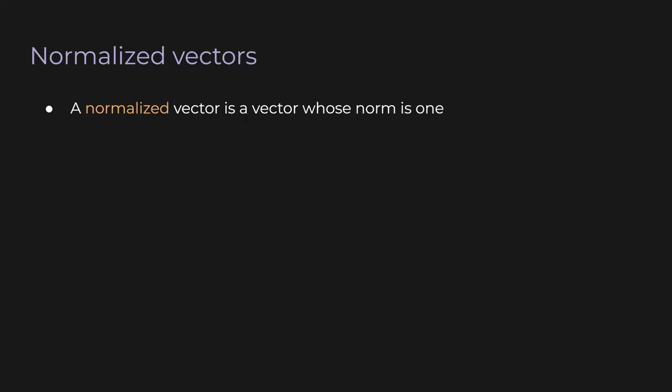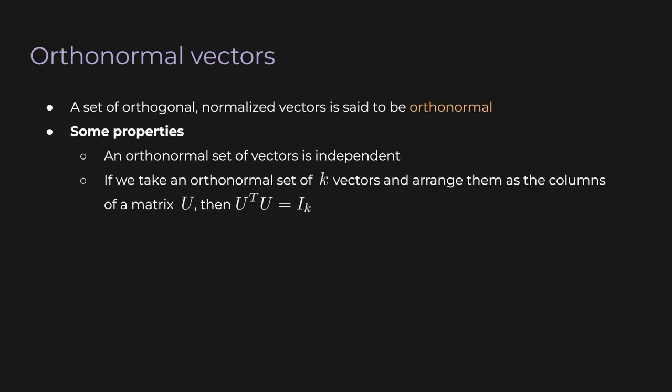Another quick piece of terminology is normalized vector. A normalized vector is just a vector whose norm is 1. Note that you can take any vector and multiply it by 1 over its length, and you'll end up with a new vector that is normalized and points in the same direction as the original. Now we can combine the last two concepts: a set of orthogonal, normalized vectors is said to be orthonormal.